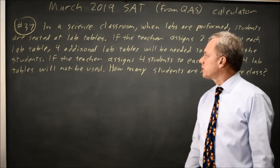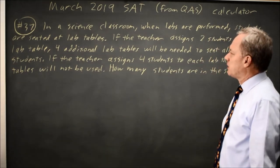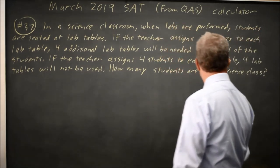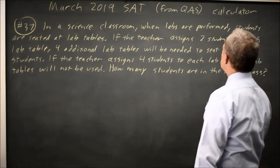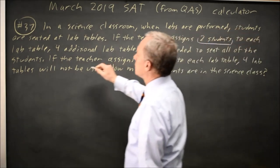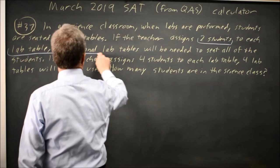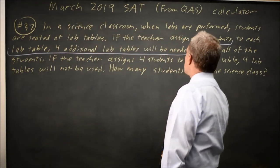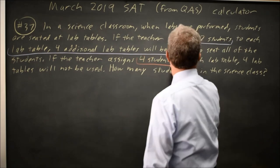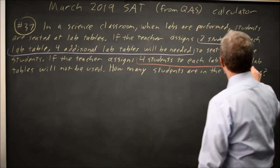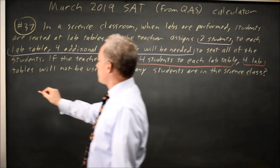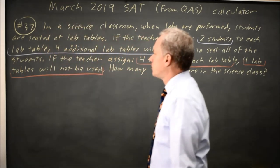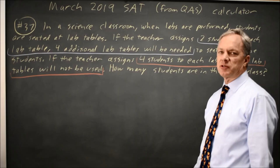So let's look at how to set up the word problem and then how to solve that once we have it set up. We're given that with two students per lab table, four additional lab tables will be needed, and with four students per lab table, four lab tables will not be used. So we have two statements relating the numbers of students and the numbers of lab tables.